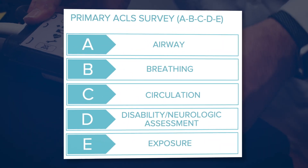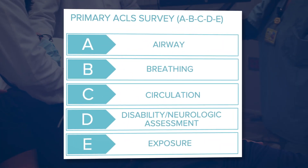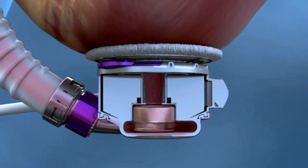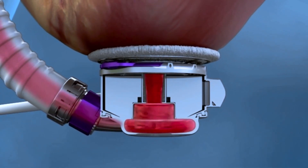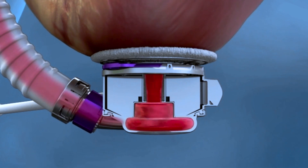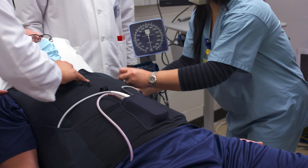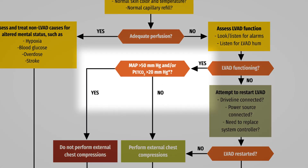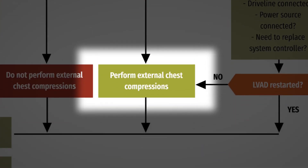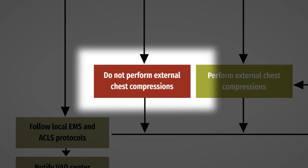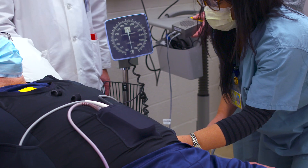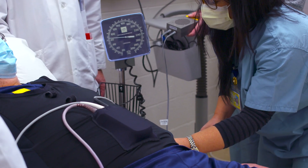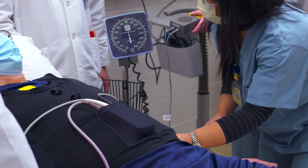Once you have confirmed that the VAD is on, proceed with your primary survey of the patient. The typical ACLS primary survey is more complicated in a patient supported by a VAD. VAD devices are based on a continuous flow of blood, making palpating a pulse difficult, if not impossible. As such, the pulse is not a critical factor in the VAD ACLS algorithm. The blood pressure obtained via a Doppler will be the factor that determines if you proceed with chest compressions and CPR. Blood pressure in VAD patients is best measured using a Doppler device, as electronic blood pressure measuring systems are often inaccurate in VAD patients.